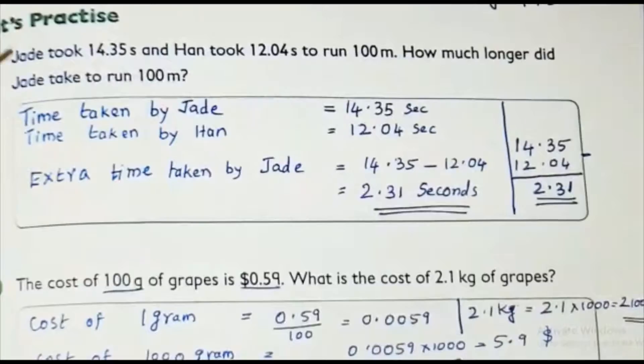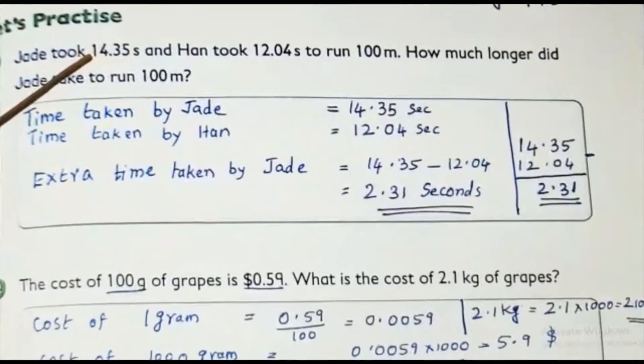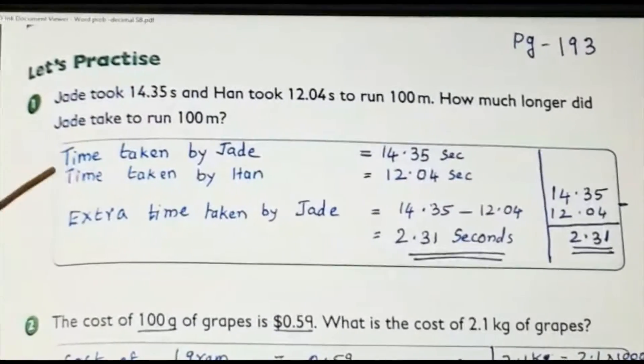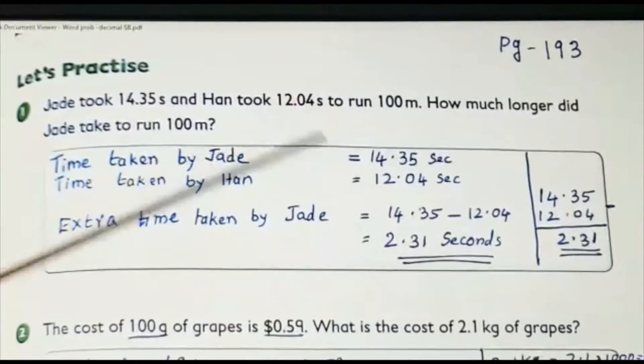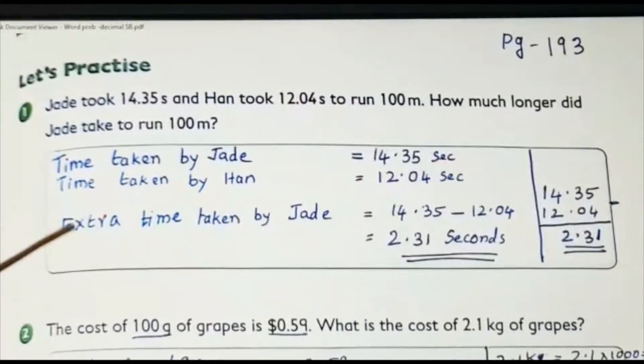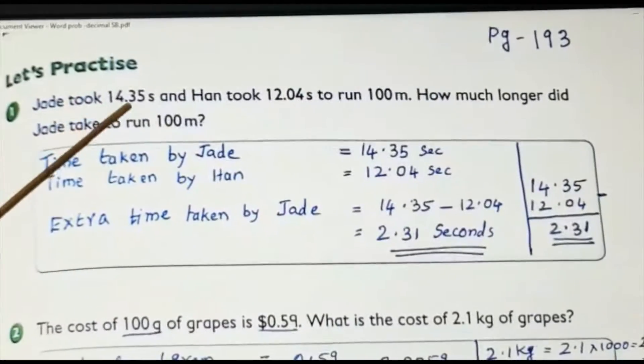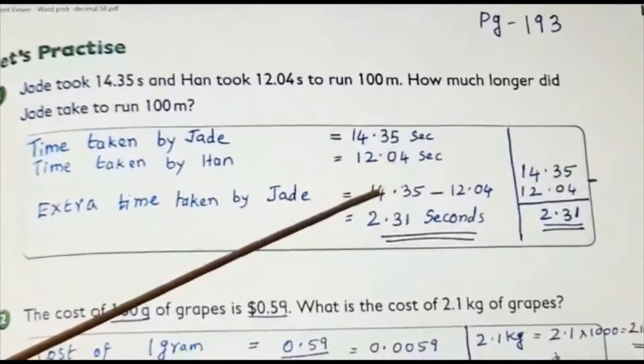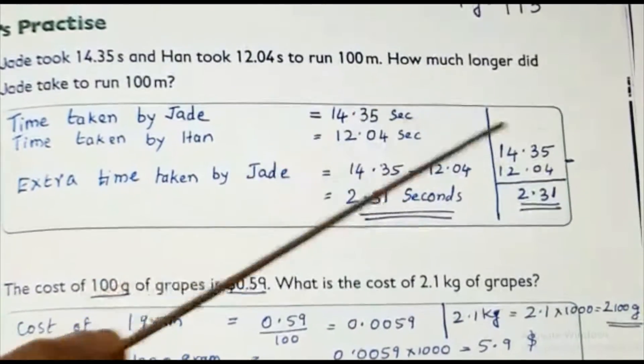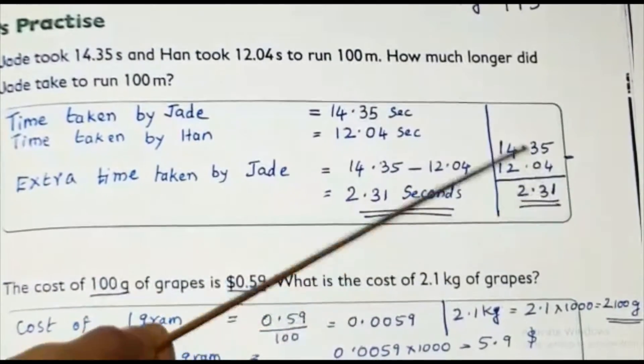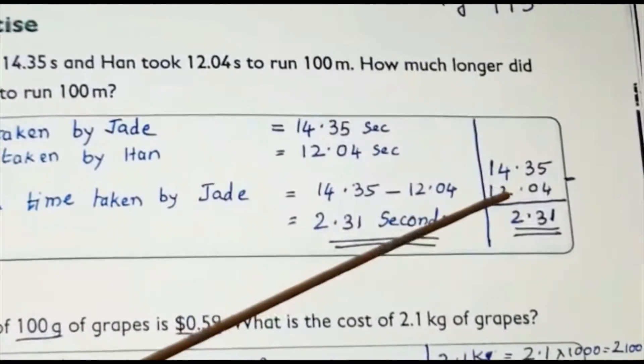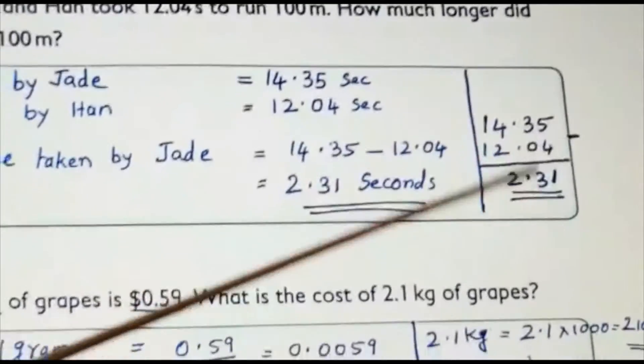The first one, time taken by Jade. How much is the time took by Jade? That is 14.35 seconds. Time taken by Han, 12.04 seconds. Extra time taken by Jade. How much? He took more. That is 14.35 minus 12.04. Again, look here. I am doing the subtraction here. Alignment should be correct.